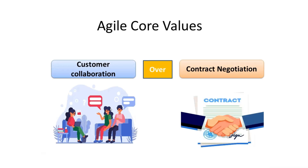Next is customer collaboration over contract negotiation. Agile encourages continuous collaboration with the customers to ensure that their needs and expectations are met. It values a flexible and cooperative relationship with the customers, and values responsiveness to changes over strict contracts. This approach allows for adjustments based on the feedbacks received, leading to a better end product.